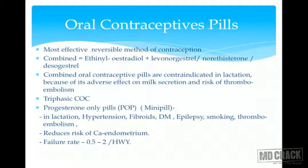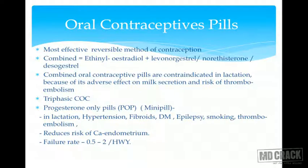Progesterone-only pills (POP), also called mini pills, contain only progesterone. The most indicated condition for POP is lactation, where COC is contraindicated. POP can be used in hypertension, fibroids, diabetes, smoking, epilepsy, and thromboembolism — conditions where COC is not used. POP also reduces the risk of endometrial cancer. Overall failure rate is 0.5 to 2 per 100 women-years.